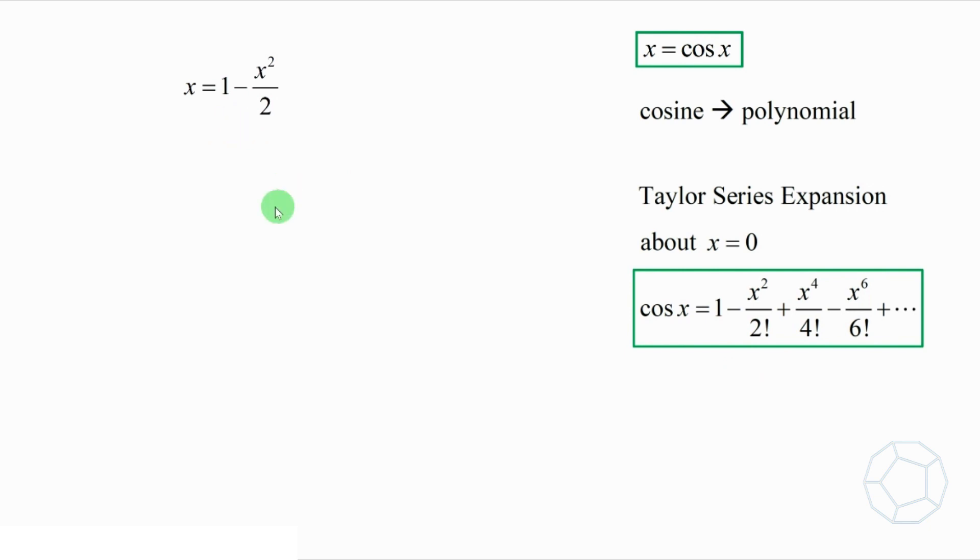Multiply both sides by 2, we get this. Putting x squared to the left, then it's x squared plus 2x is equal to 2.